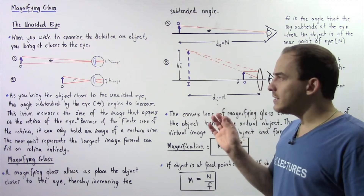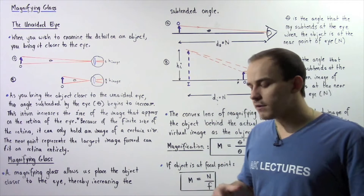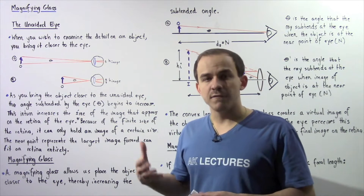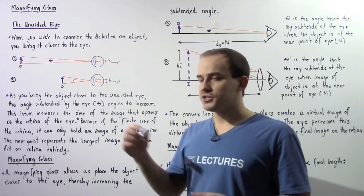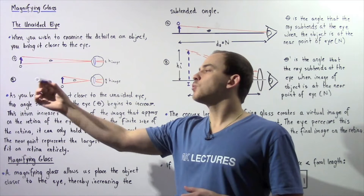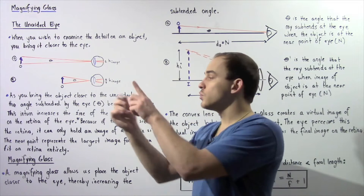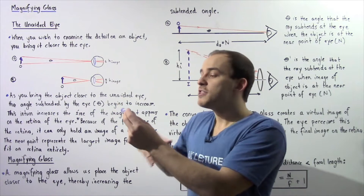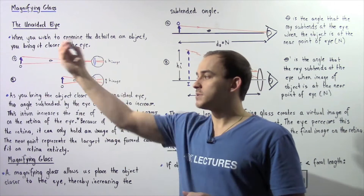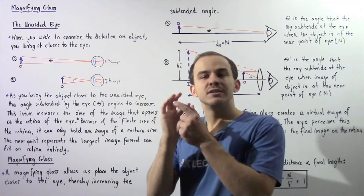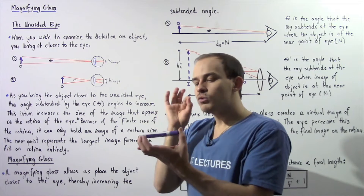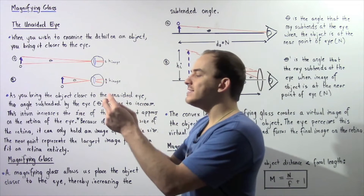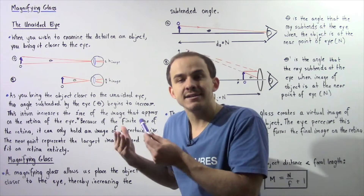An unaided eye is an eye that does not have any type of corrective lens. When you wish to examine fine detail on some particular object — for example this marker — you bring the object closer to the eye, decreasing the distance between the object and the eye. Notice the actual size of the object does not increase as you move it closer; the object remains the same. But how exactly are we able to perceive more detail? What exactly is magnified?